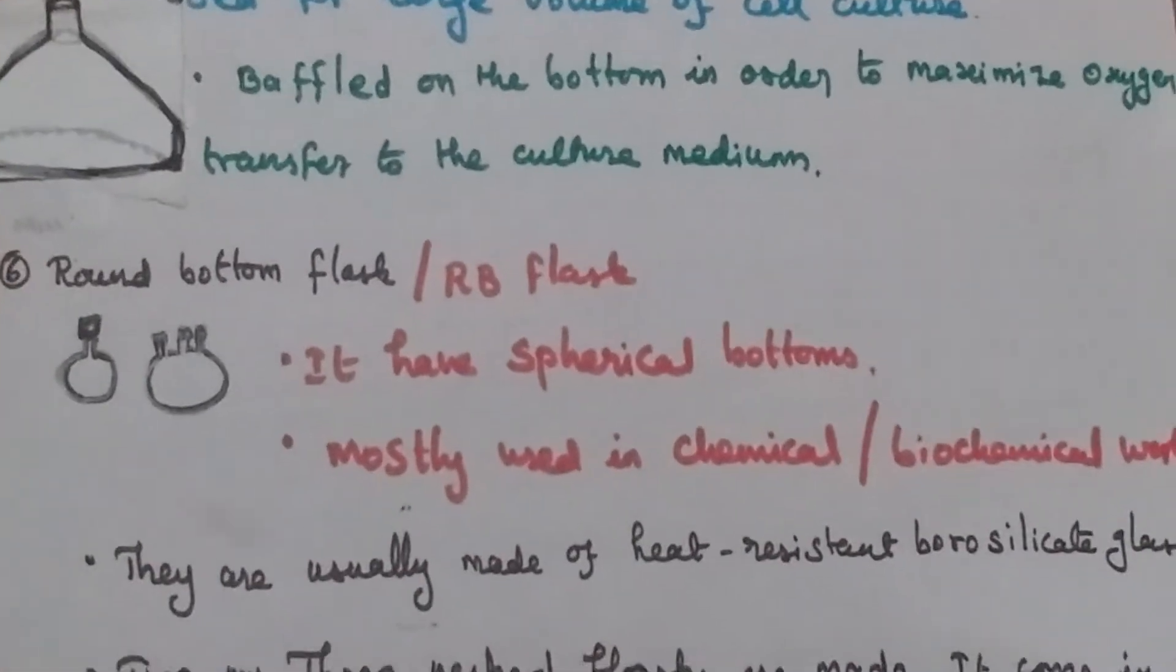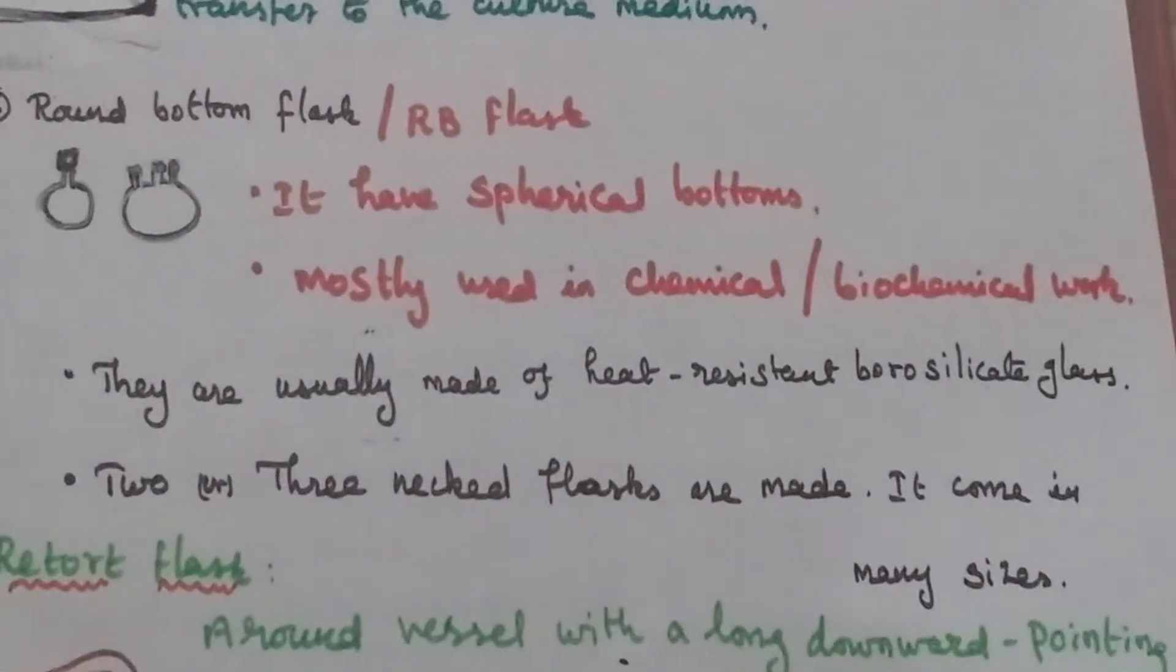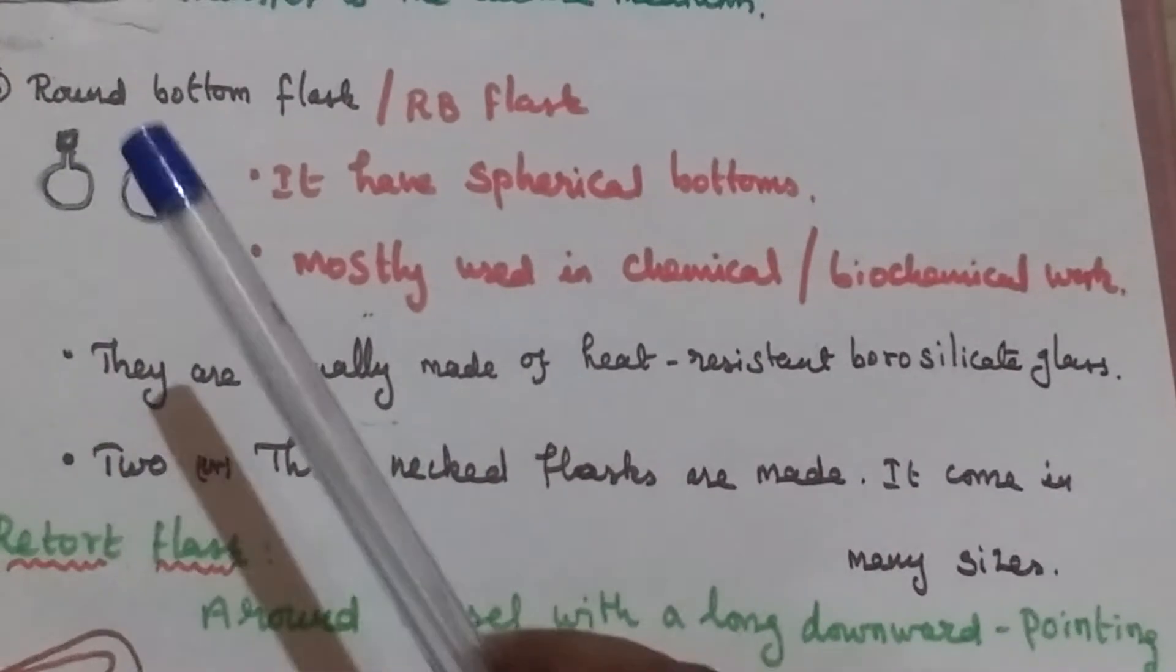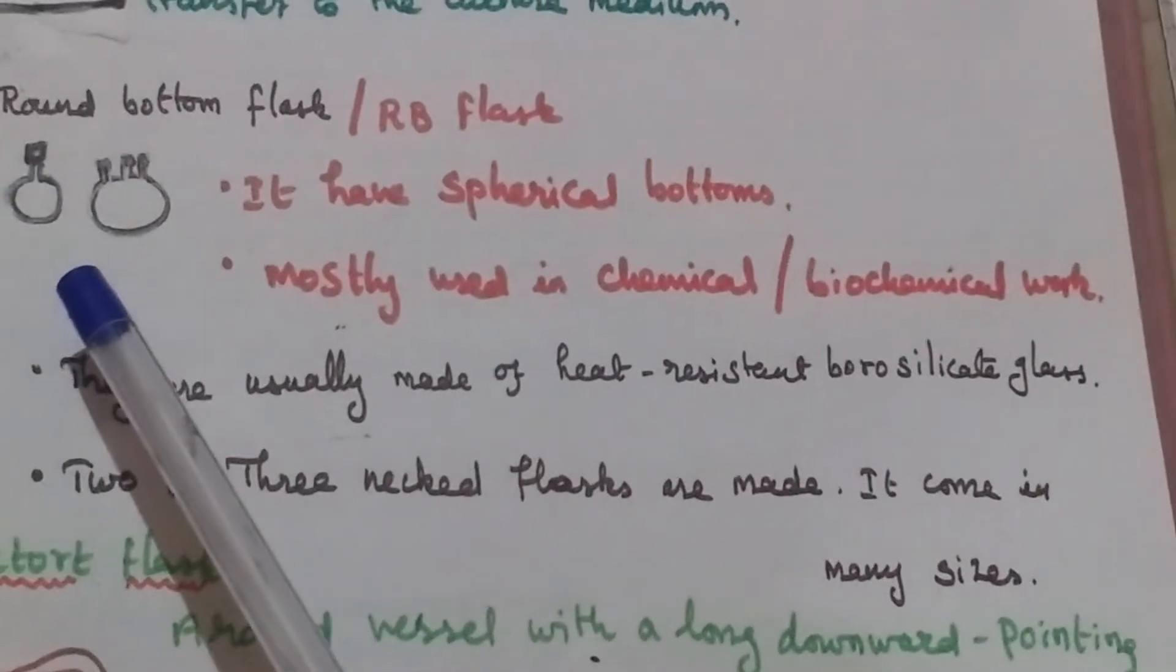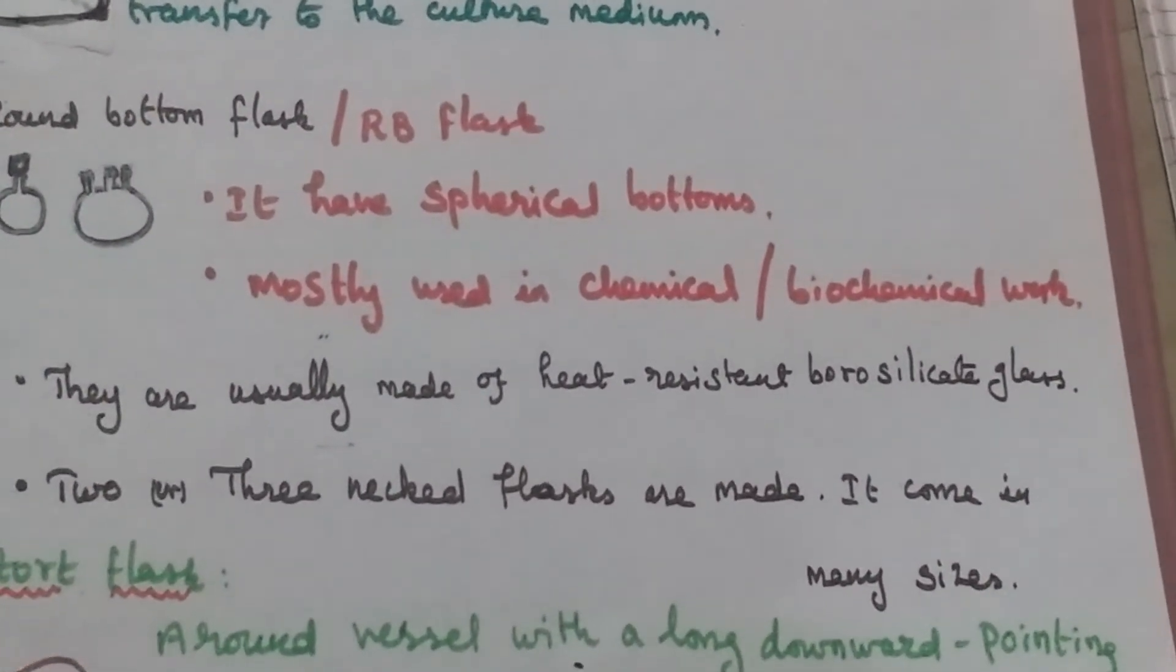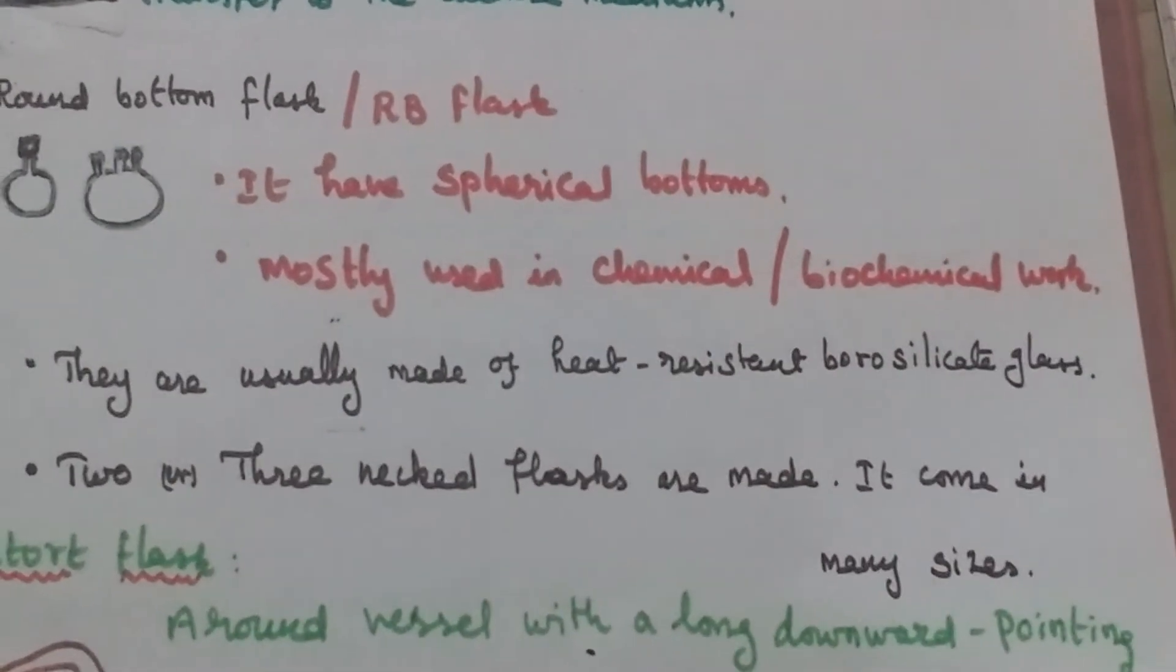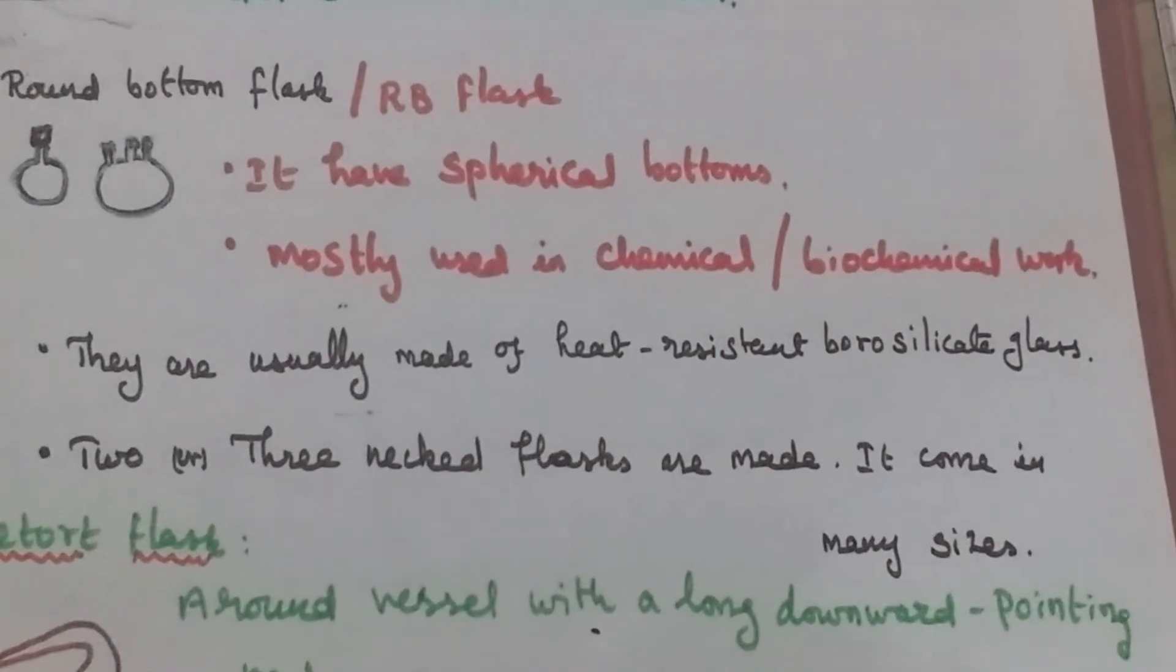Other flasks include the round bottom flask, also called an RB flask. It has a spherical bottom and is mostly used in chemical and biochemical laboratories for distillation purposes.